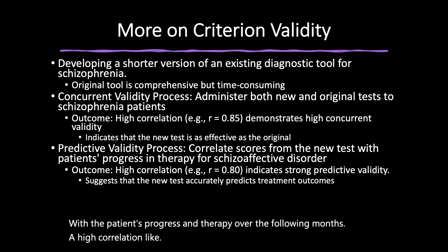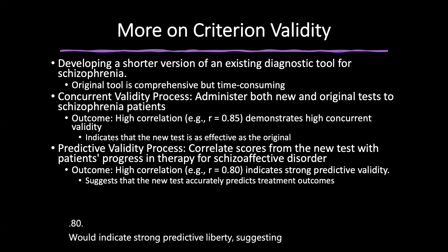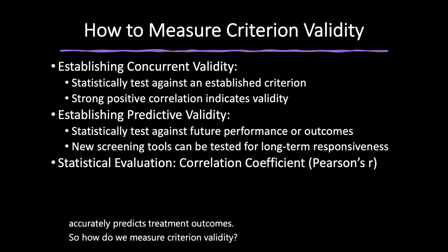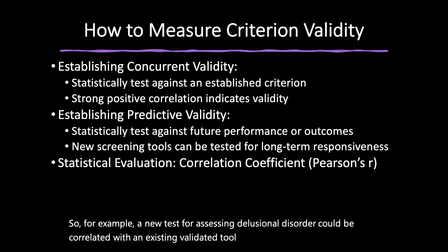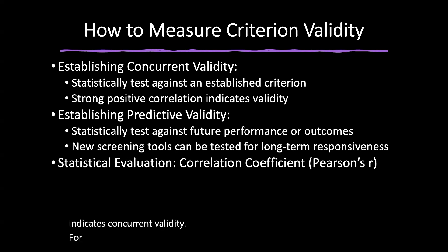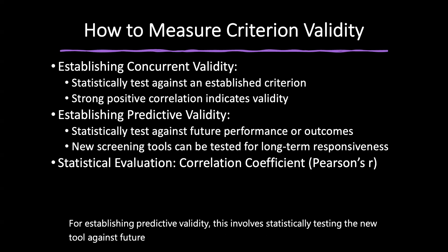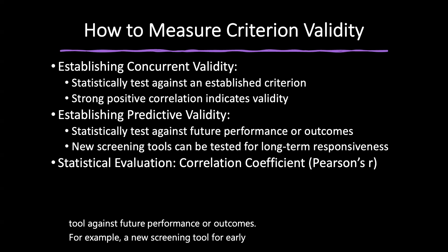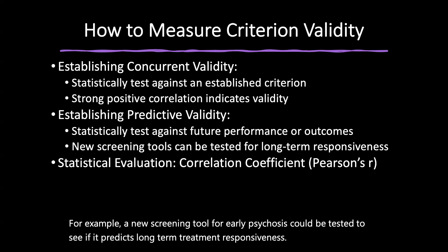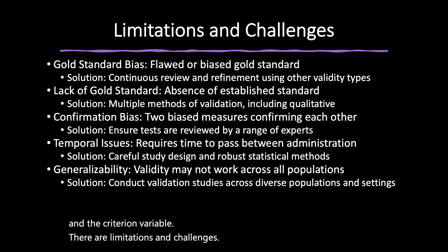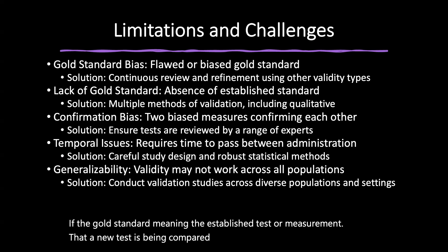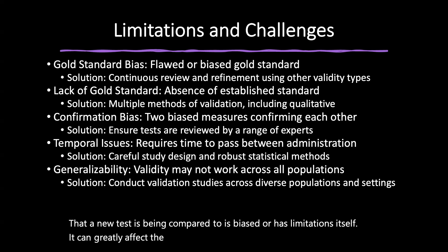Other factors influencing the meaningfulness of criterion correlation include the criterion problem — the criterion of interest may be complex and challenging to find, and in mental health, defining recovery is often subjective and variable. Criterion contamination involves confounding variables attenuating the correlation coefficient rho sub x,y. Unreliability of predictor and criterion — measurement error in either variable can weaken the correlation. Sample size and statistical power — smaller samples lead to less reliable estimates of the correlation coefficient. Restriction of range occurs when collecting validation data of a clinical instrument on a non-clinical population, biasing the correlation — for example, using a depression scale in the general population may lead to misleading conclusions about its validity for clinical use.